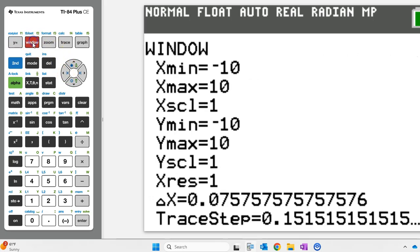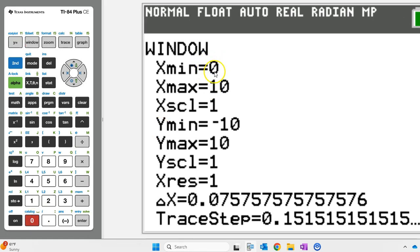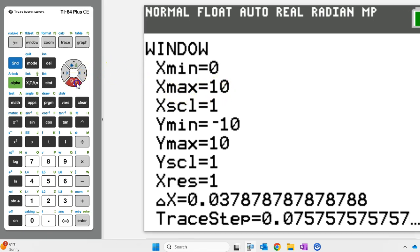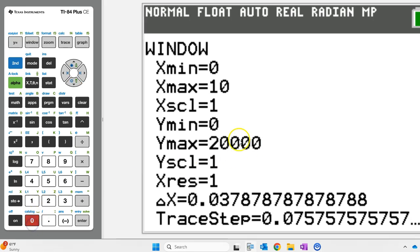First, we need to adjust the window. X min can be 0. This is our time, so we can just start from time 0. We don't know how long it will take for the value of the car to reach 10,000. I'm going to leave x max at 10 for now. The y min and y max represent the value of the car. We can set y min as 0. Let's set y max as 20,000 because we know that's the maximum value of the car, the initial value, and the value decreases or depreciates from there. Let's hit graph and see what we've got.